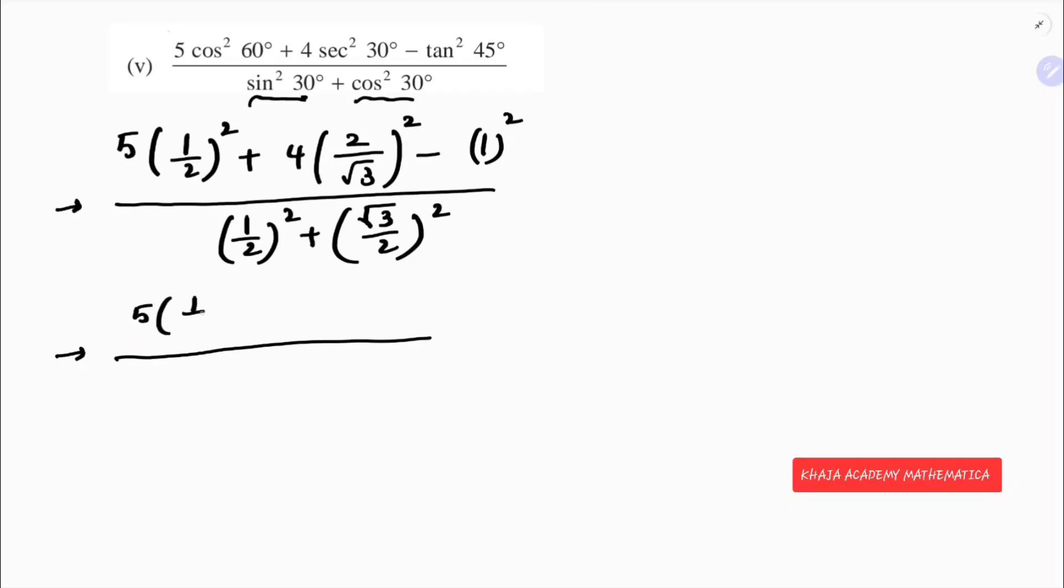Numerator: 5 into 1 by 4 plus 4 into 4 by 3 minus 1. The denominator part is 1 squared which is 1 by 4, and root 3 squared is 3, 2 squared is 4. So numerator is 5 by 4 plus 16 by 3 minus 1, and denominator LCM is 4, so 1 plus 3.